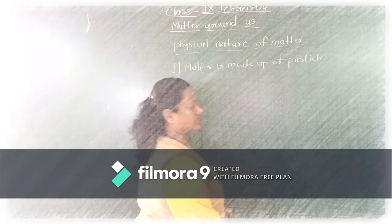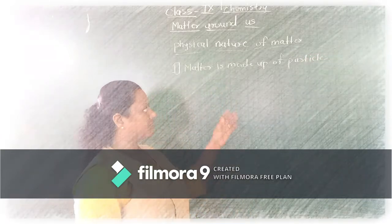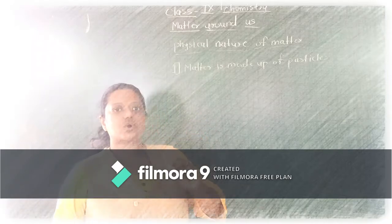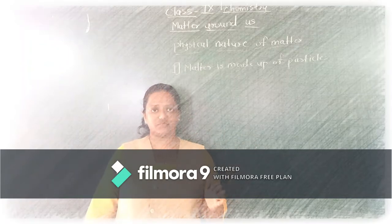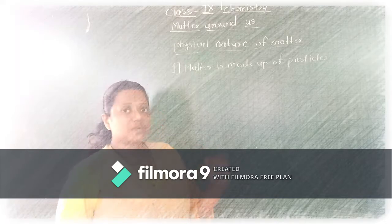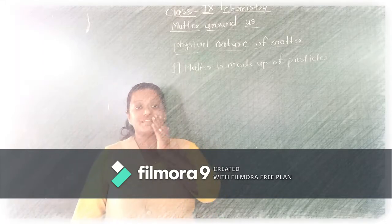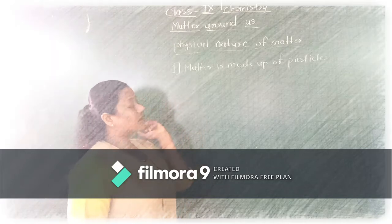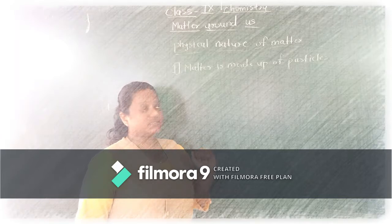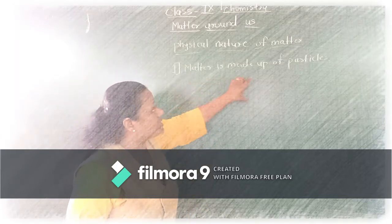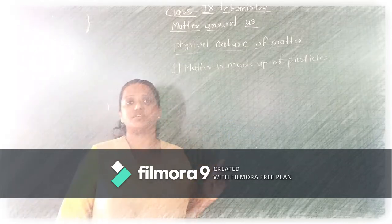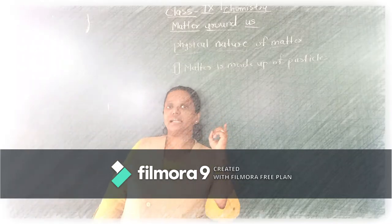Students, pay attention. In the first lecture, I covered the old concept of matter as described by old philosophers, and then I explained the modern concept of matter. Now we are going to talk about the physical nature of matter. The first point is matter is made up of particles. For that, I gave you the example of lemon.